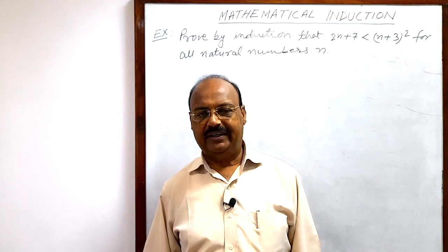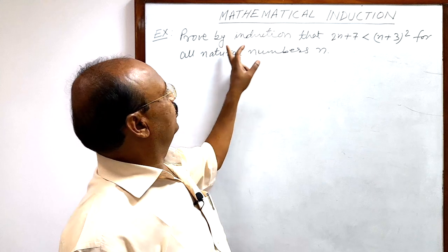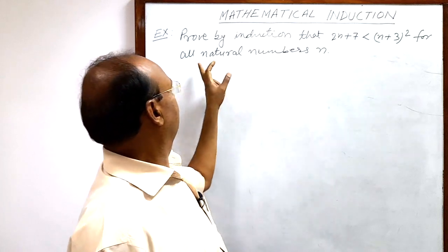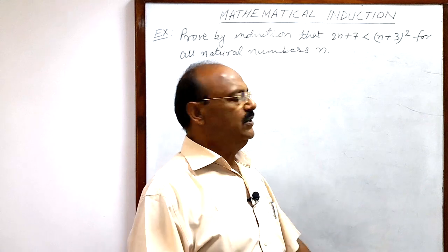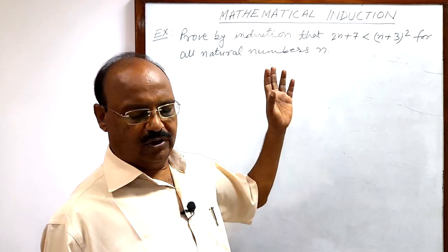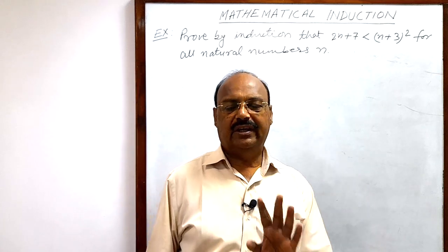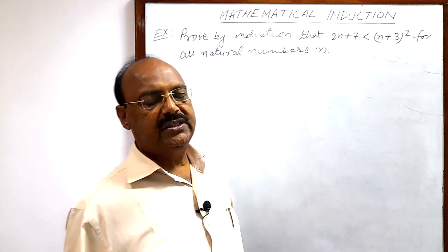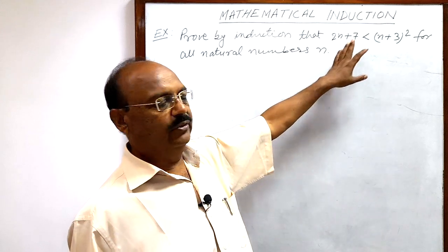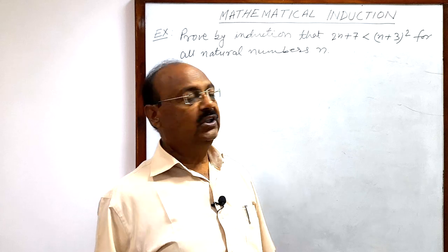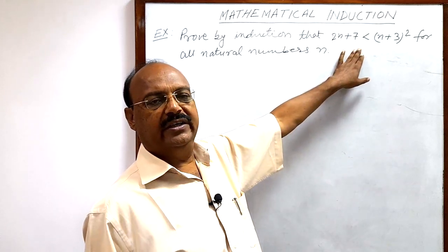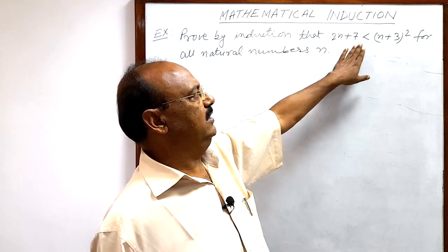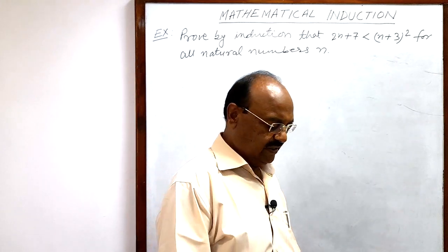Let us discuss a question from the chapter Mathematical Induction. The question is: prove by induction that 2n + 7 is smaller than (n+3)² for all natural numbers n. This question can be solved in three steps: first, show it is true for n=1; second, assume it is true for n=r; and third, show the statement is true for n=r+1, meaning P(r+1).